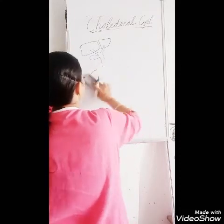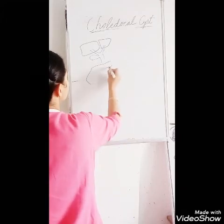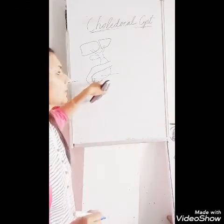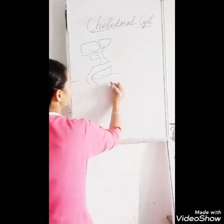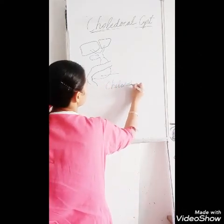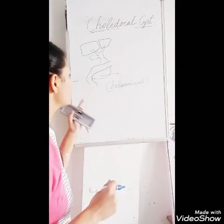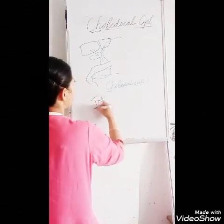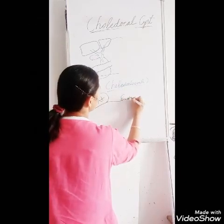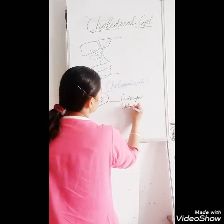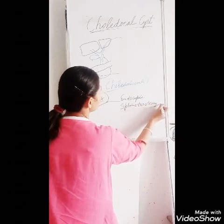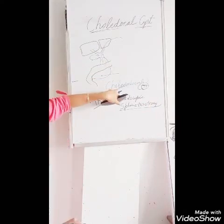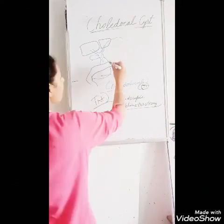In the third type, when there is dilatation of the intra-duodenal segment of the common bile duct - known as choledochocele - we will use an endoscope and the procedure known as endoscopic sphincterotomy is done. Endoscopic sphincterotomy is the treatment for the third type of choledochal cyst, the choledochocele.